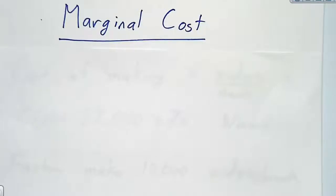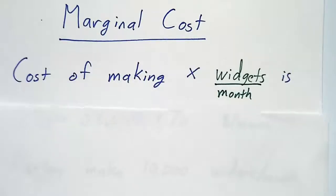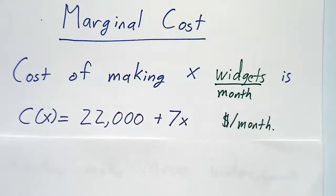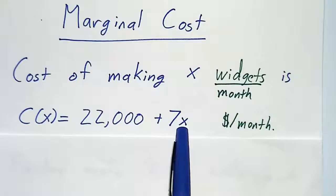In this video, we're going to talk about marginal cost, marginal profit, and marginal revenue. So let's suppose that you had a factory that makes x widgets per month. And the cost of making x widgets per month is given by the formula 22,000 plus 7x. You can think of that as it just costs $22,000 per month just to keep the lights on. And then for every additional widget that you make, it costs you an extra $7.